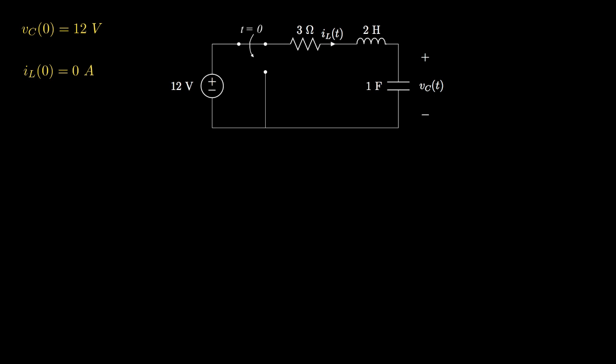Next we'll take a look at the circuit after we move the switch. At that time, we'll remove the 12 volt source from the circuit and just be left with the resistor, the inductor, and the capacitor.